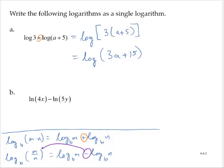I can write that as a quotient of the logarithm of the quotient of the arguments. And so I can write this as the natural log of 4x divided by 5y.